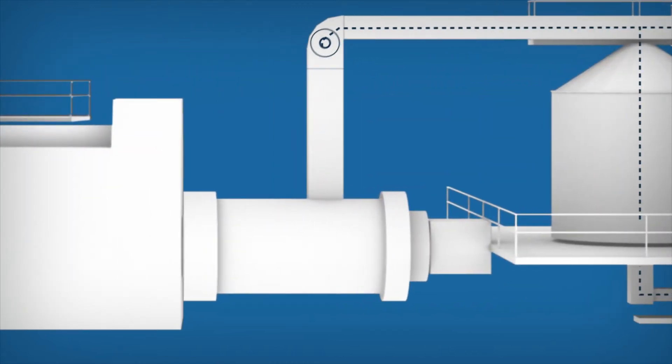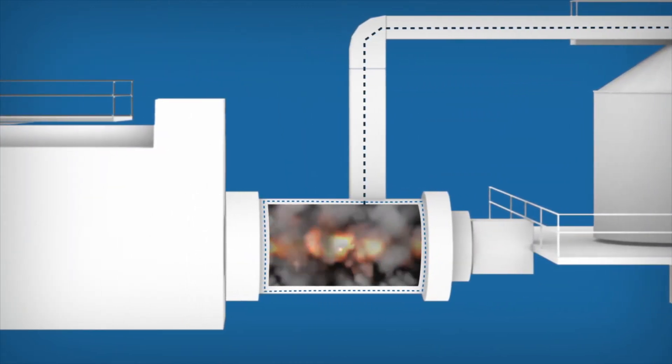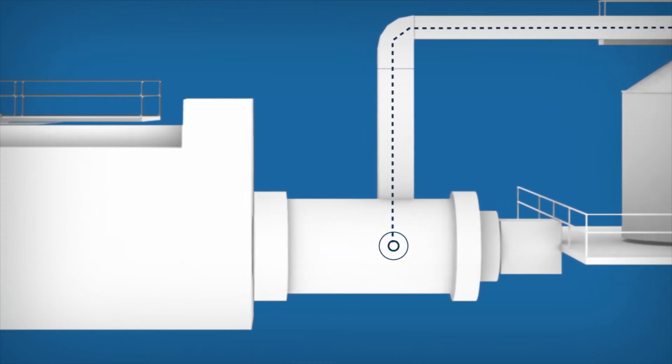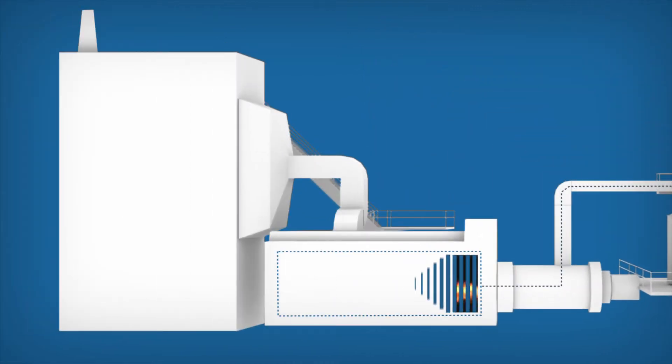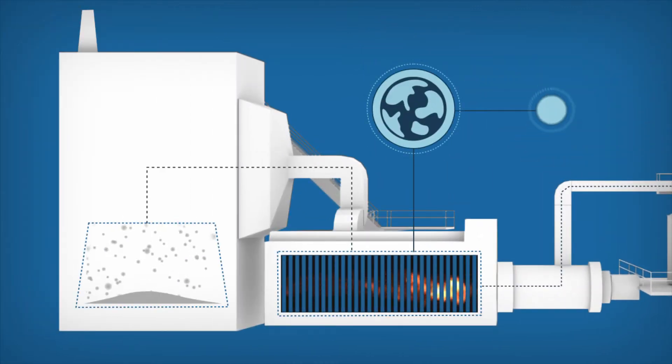Next, the syngas is directed into an ignition chamber within the boiler, where it undergoes combustion. The syngas displaces natural gas, so it's better for the environment and reduces costs.